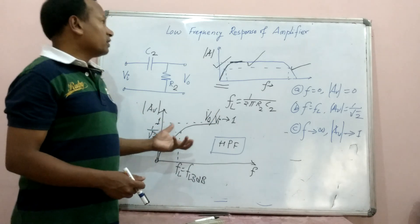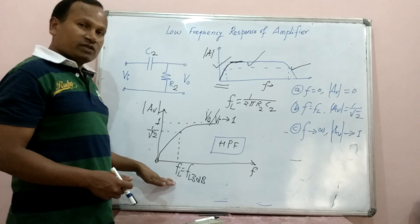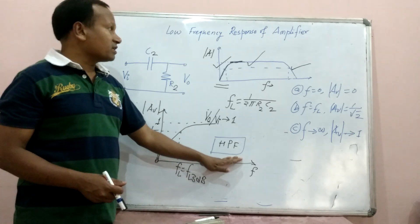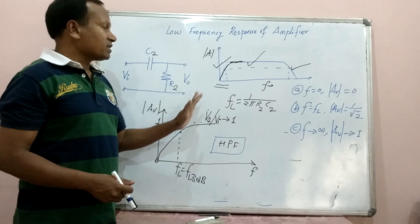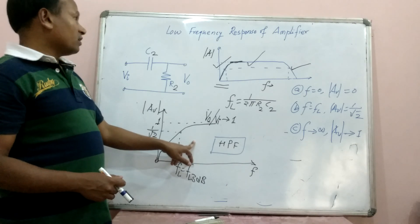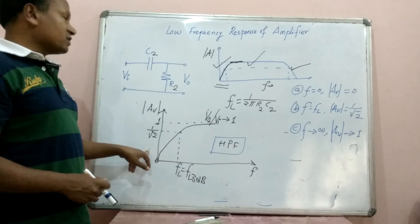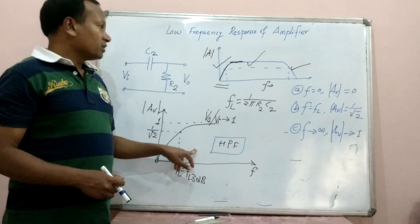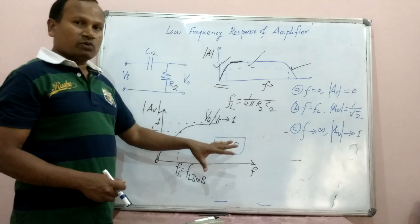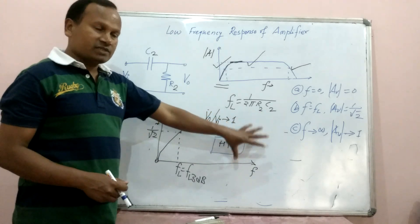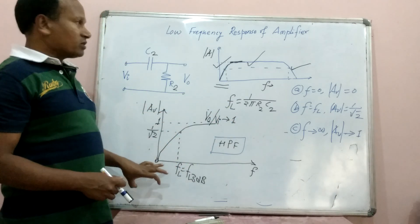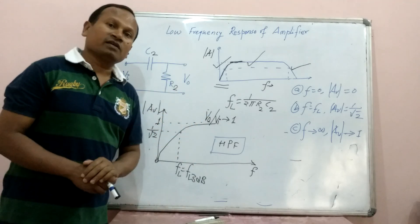So this is about the low frequency response of an amplifier, where there is a lower cutoff frequency and this response is similar to the response of a high-pass filter. We have studied high frequency response as well as low frequency response. The complete response includes amplitude response as well as phase response, but we have limited our discussion to only the amplitude response of an amplifier at low frequency. Thank you.